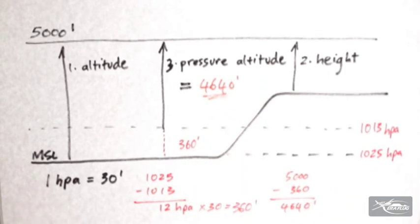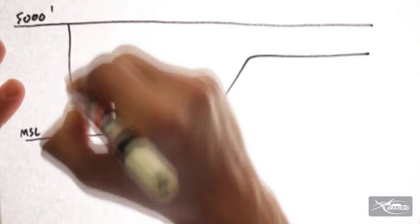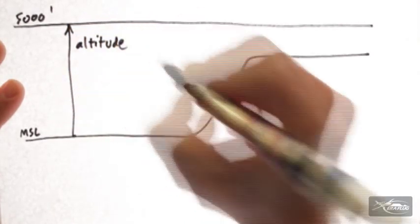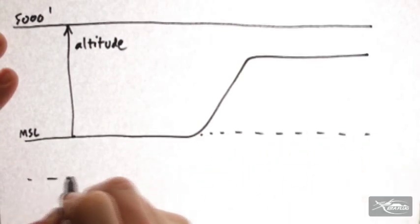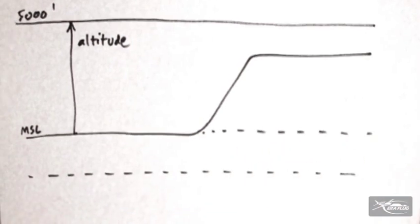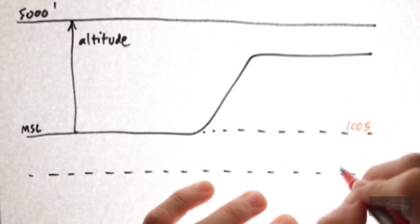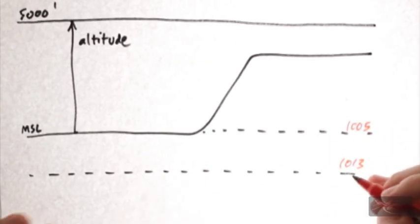Okay, let's do an example now, and we'll draw our mean sea level and our elevation. And today we'll use, at mean sea level, a QNH of 1005.